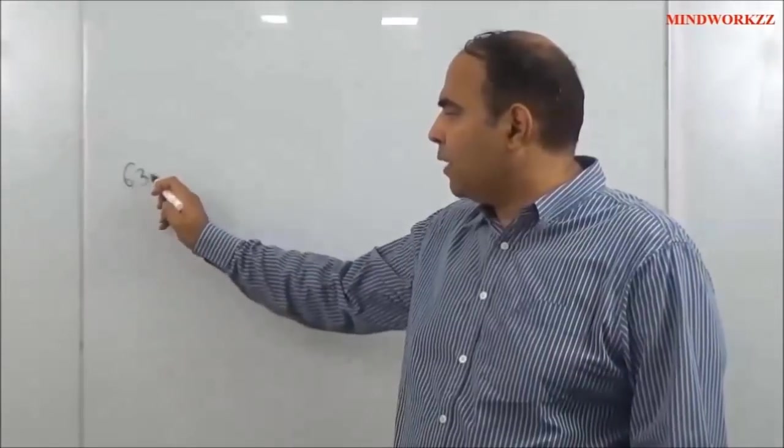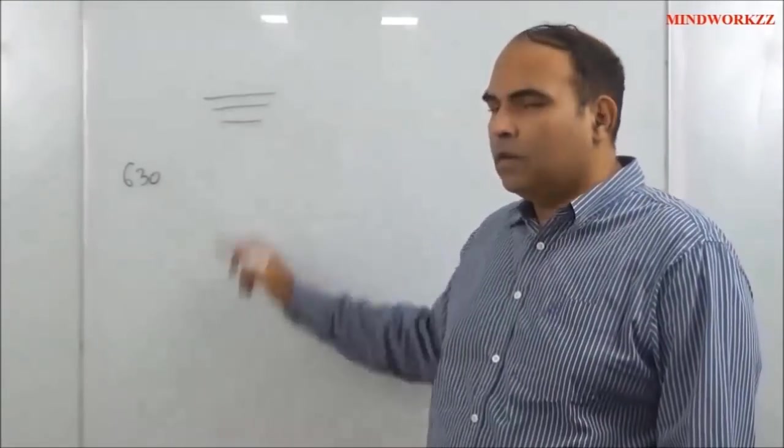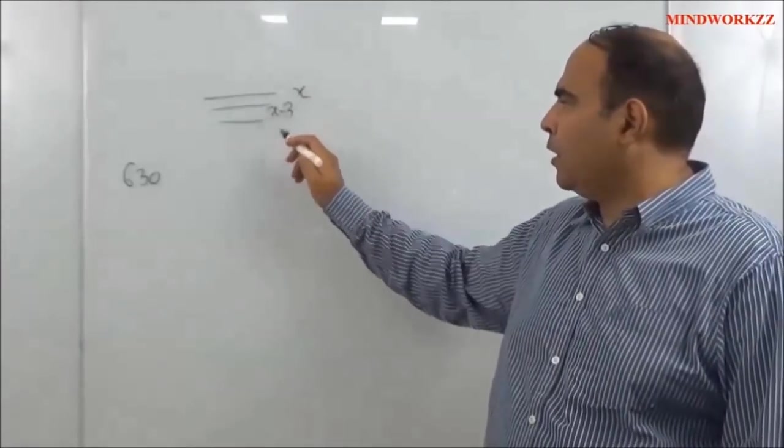So as you can read the question, it talks about a group of 630 children arranged in rows where every row contains three fewer children than the previous one. So clearly, if you think algebraically, this would be the kind of rows you will get.